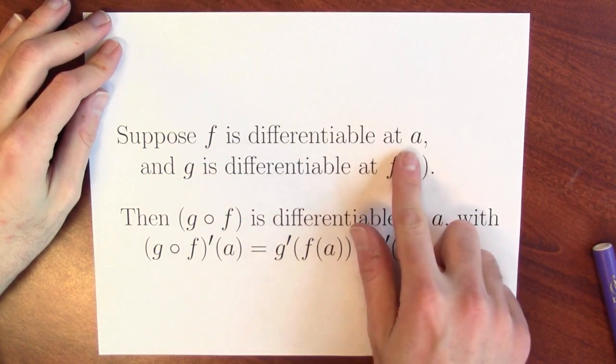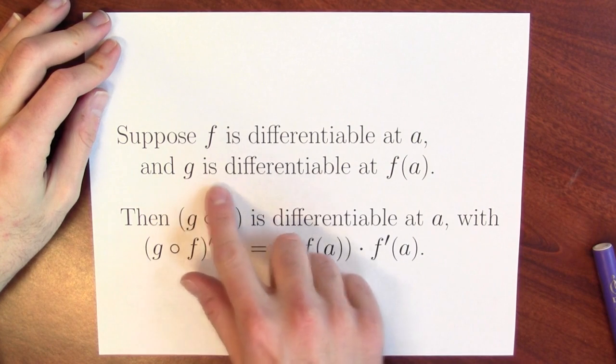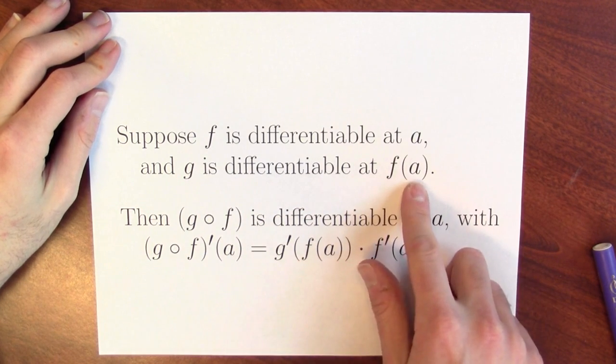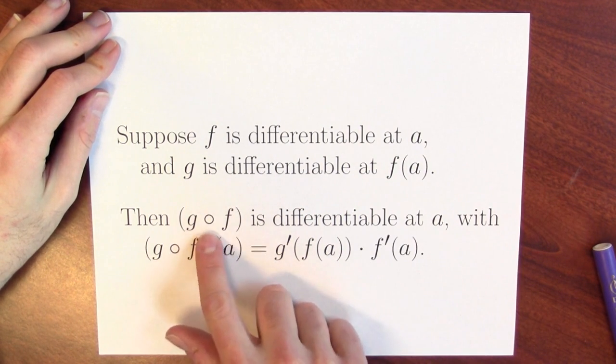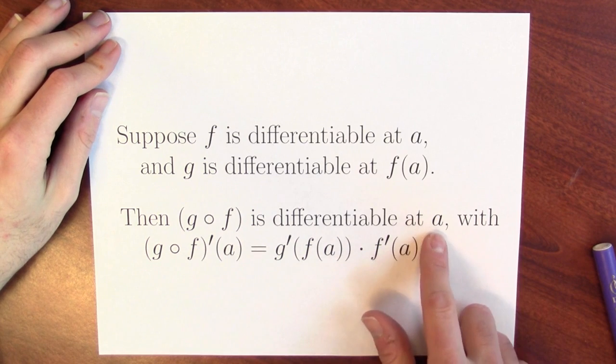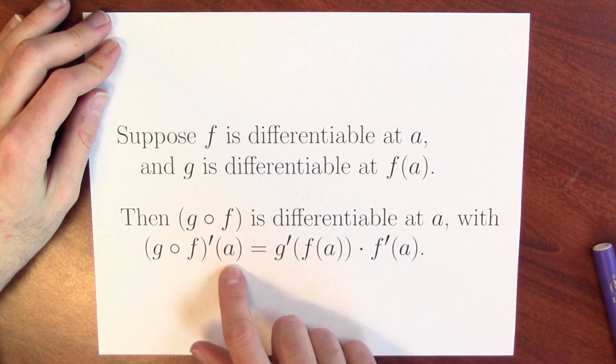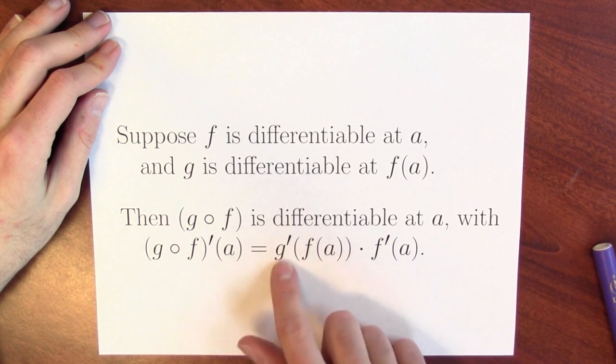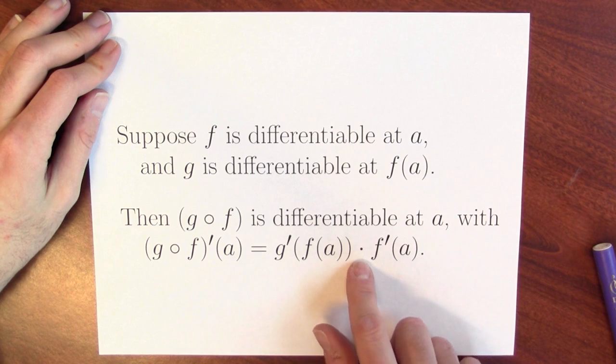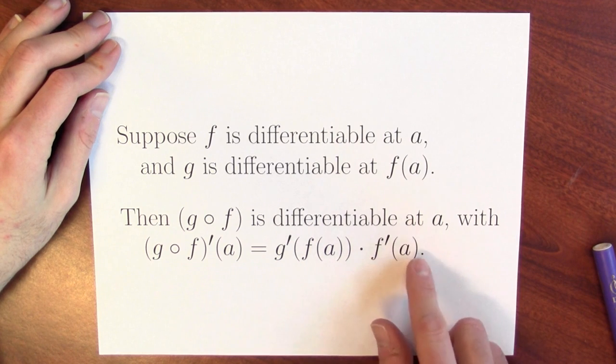Suppose that f is differentiable at a point a and g is differentiable at the point f of a. Then the composite function g composed with f is differentiable at a with the derivative of g of f at the point a equal to the derivative of g at f of a times the derivative of f at a.